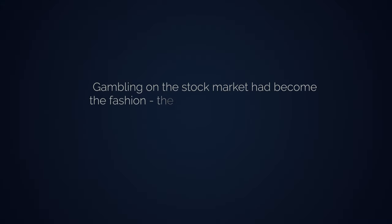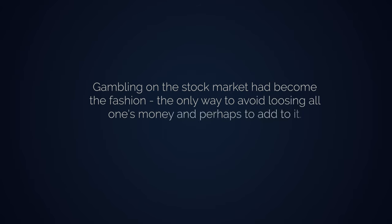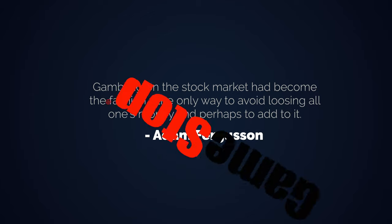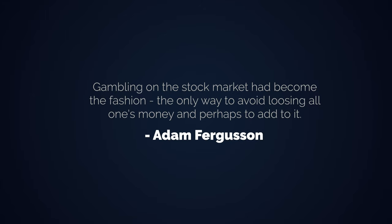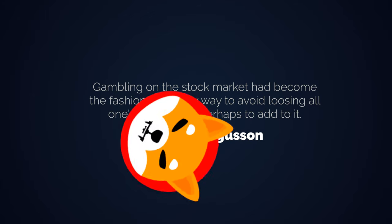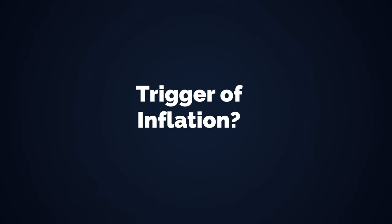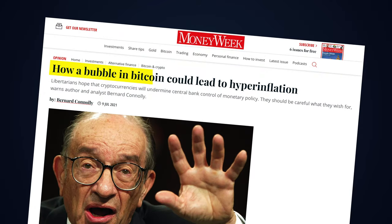One thing that happened at this time was that everyone became a speculator and started gambling on the stock market. Gambling on the stock market had become the fashion — the only way to avoid losing all one's money and perhaps to add to it. I believe that this speculation is currently happening as well, with everyone becoming a stock or crypto gambler. What's even more interesting is that in the past this was regarded as the trigger of inflation instead of a consequence — the exact same thing is happening today.